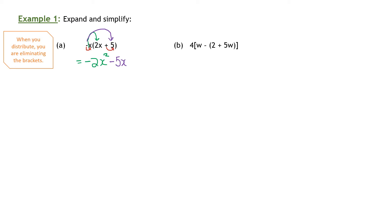Now, are these like terms? Are the negative 2x squared and the negative 5x like terms? Can I add them together? Remember what like terms are: an x squared shape is a square, and a single x is a rectangle. So I cannot put those together — those are unlike terms, so I have to stop here.